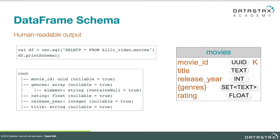Suppose you want to look at the schema of a data frame and you're just hacking in the Spark shell. The printSchema method is super handy for that. It's going to dump to the shell in human-readable format the schema of the data frame — you get the column names and data types in a nice little summary. It's a super handy hacking and debugging tool.